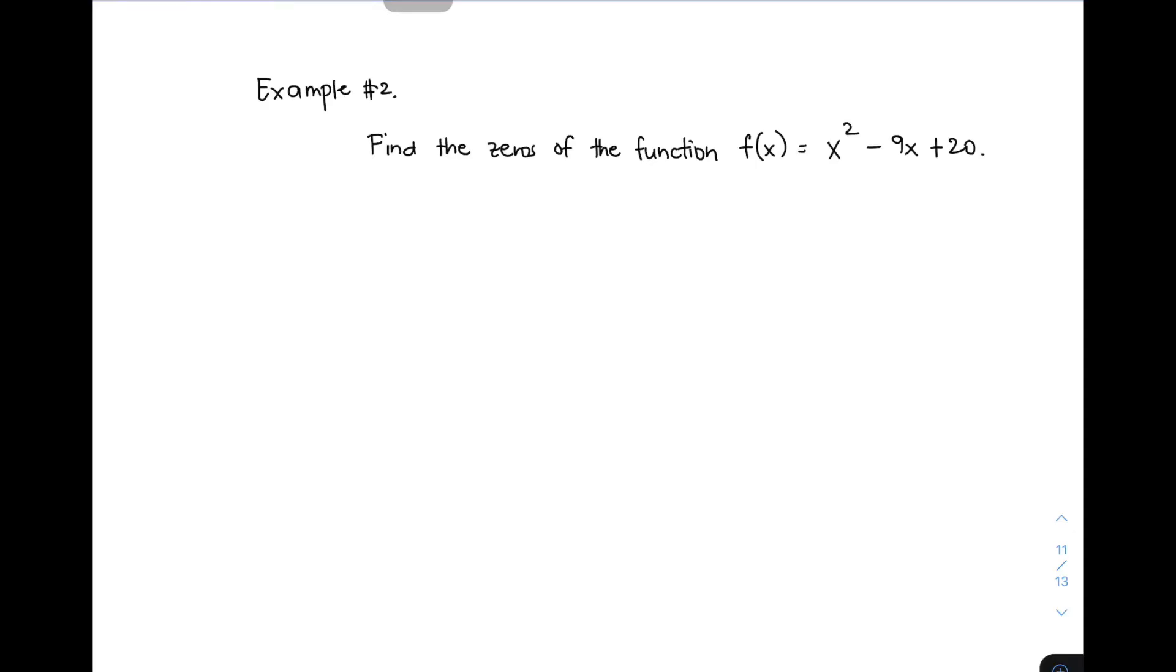In example number 2, you have here the problem: find the zeros of the function f(x) = x² - 9x + 20. First thing you need to do is to convert or transform f(x) equal to 0. You have x² - 9x + 20. Then, you can rearrange your equation. Now, you have x² - 9x + 20 = 0.